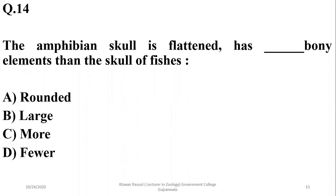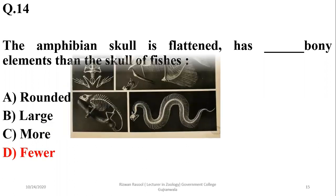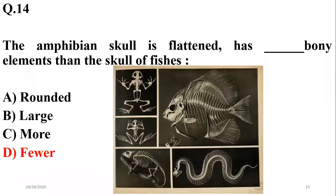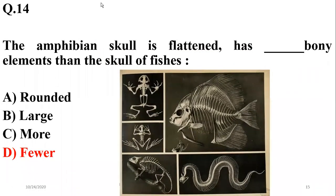The amphibian skull is flattened and has fewer bony elements than the skull of fishes. As far as the skull of amphibians is concerned, it has fewer bony elements when compared to the skull of fishes. So the right option is D.